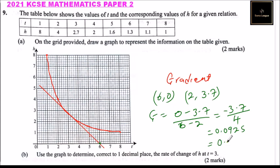Because we are told to write the gradient to one decimal place, this is 0.1. So that is the rate of change of h at t equals 3, and you get four marks.